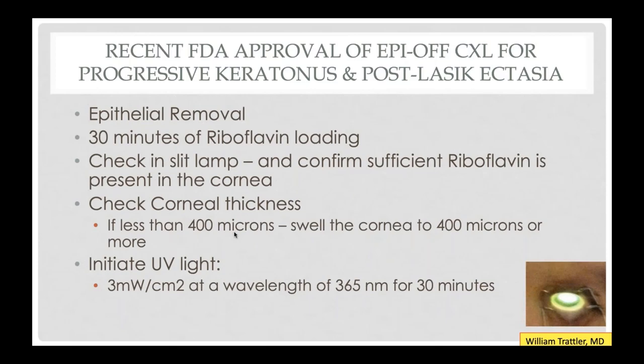The FDA approved method of crosslinking: the epithelium is removed, then we do 30 minutes of riboflavin loading. After that, you check the slit lamp and confirm sufficient riboflavin is present — look at the cornea to ensure it's uniformly saturated, not just checking for anterior chamber flare. You also want to check corneal thickness at the end of loading: if you want to be above 400 microns, you can swell the cornea with hypotonic saline or hypotonic riboflavin to get to 400 microns or higher. Then initiate your UV light for 30 continuous minutes.